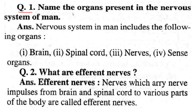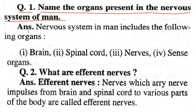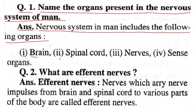Question: Name the organs present in the nervous system of man. Answer: The nervous system includes the following organs — number one: brain; number two: spinal cord; number three: nerves; number four: sense organs.